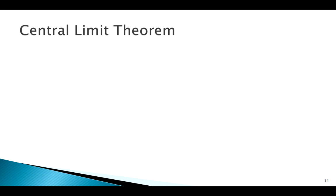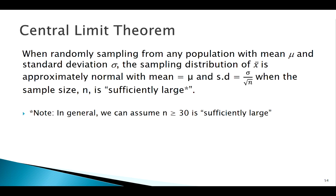Previously we looked at some simulations that led us to the idea of the Central Limit Theorem. The idea is: no matter the population we're sampling from, if our sample size is big enough — and we showed in our simulation that usually 30 is pretty good — then we can assume normality of the sampling distribution of the sample mean, centered at mu with standard error sigma over root n.